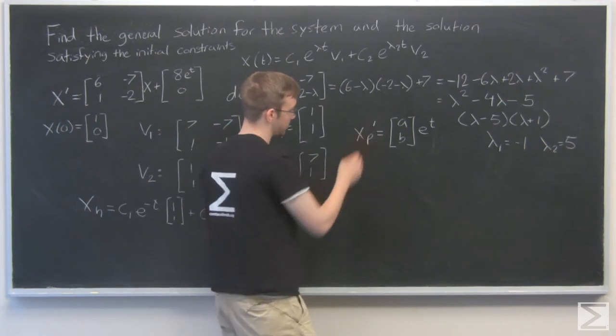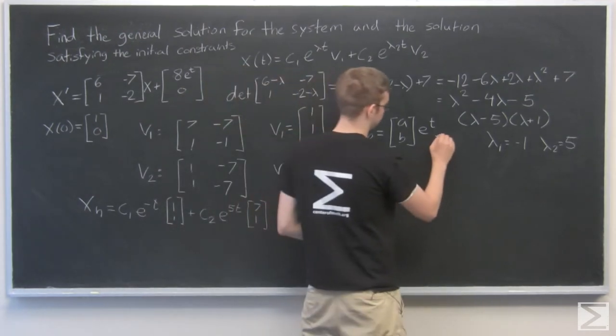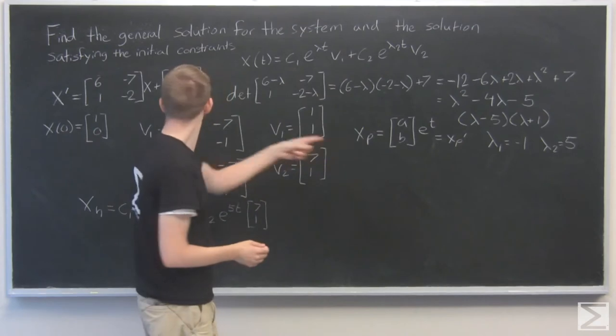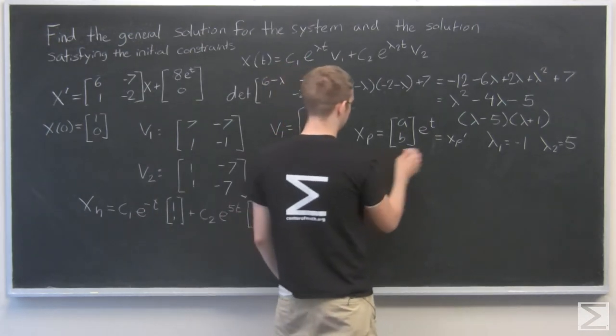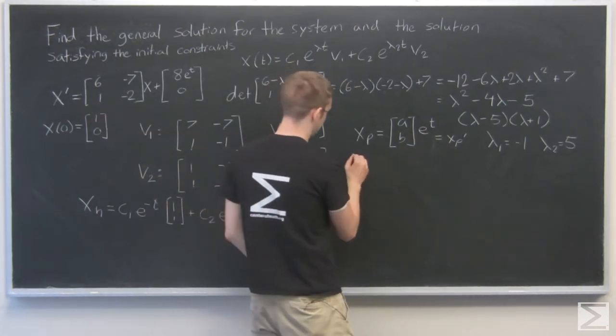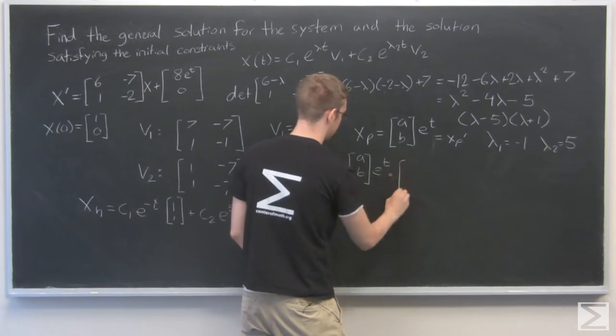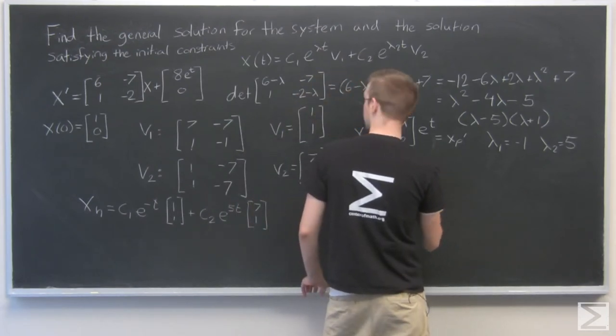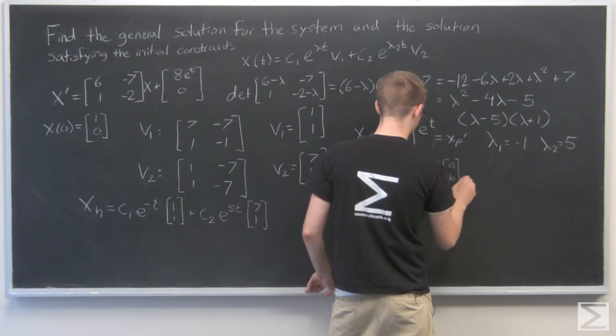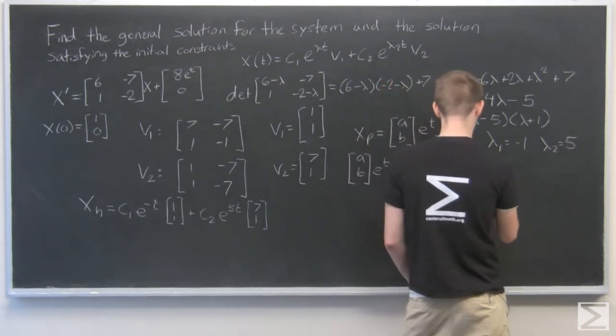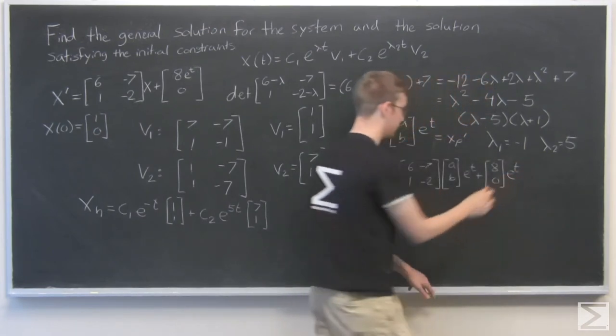So xp is going to be [a, b] times e^t. And you'll notice that xp is the same as the derivative. If we take the derivative, it's the same thing. So we're going to plug this back into our original equation and see what values we get for a and b. So xp is going to be [a, b]*e^t equals our matrix [6, -7; 1, -2] times [a, b]*e^t plus, I'm just factoring that e^t out.